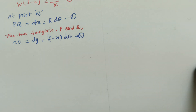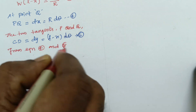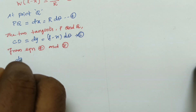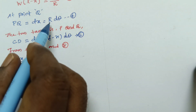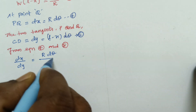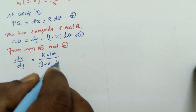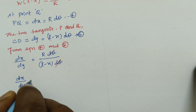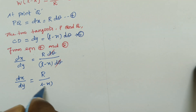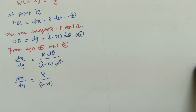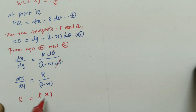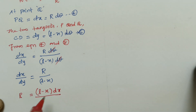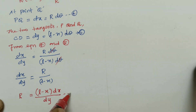From equations 4 and 5, you can write dx by dy equal to R·dθ divided by (L minus X)·dθ, giving dx/dy equals R/(L minus X). From this equation, you can write the value of R: R equals (L minus X) times dx divided by dy. This is equation number 6.